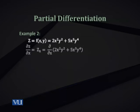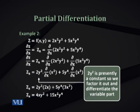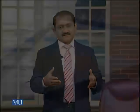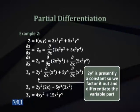In Example 2, z is a function of x and y given as z = 2x²y² + 5x³y⁴. Again, nothing new — we will have two first-order partial derivatives. When differentiating with respect to x, we assume y is a constant, so 2y² is a constant coefficient. We factor it out and differentiate the variable part x², giving 2x, multiplied by the retained constant 2y². In the second term, 5y⁴ is constant, and we differentiate x³ as 3x², multiplied by 5y⁴.